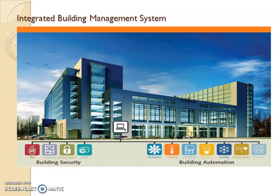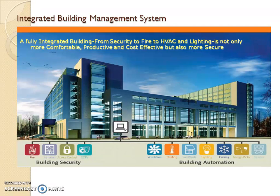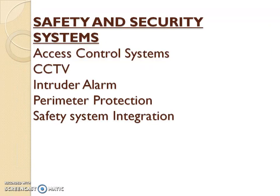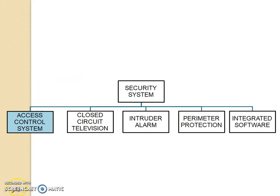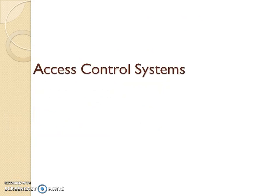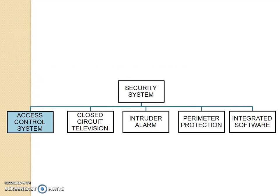In this lecture, we will be looking into access control systems which are part of the security system of a building. Within safety and security systems, the important thing that we will be seeing is access control systems. But apart from that, we do have CCTV, intruder alarm protection, perimeter protection, and safety system integration. Access control is part of the security system which primarily focuses on restricting the access of people or vehicles into a building.